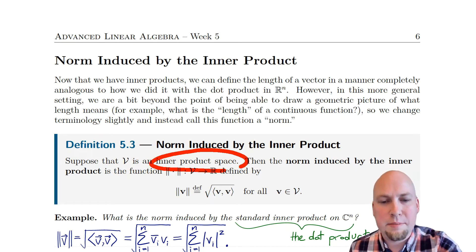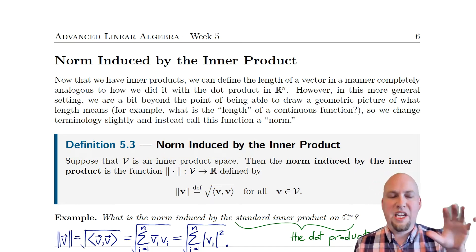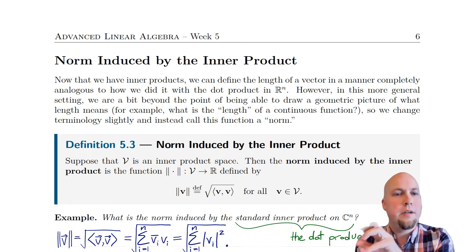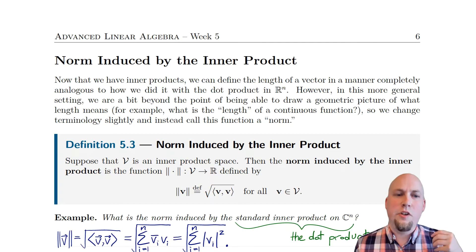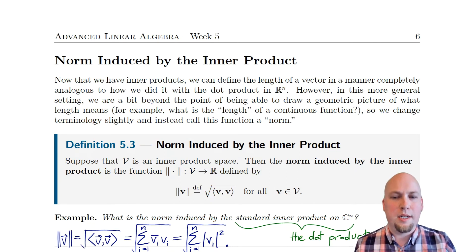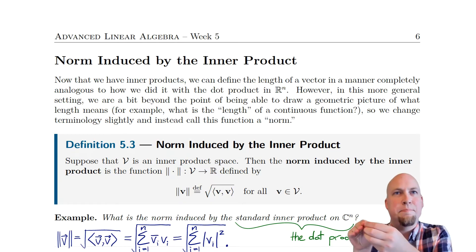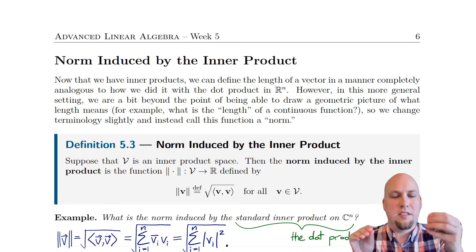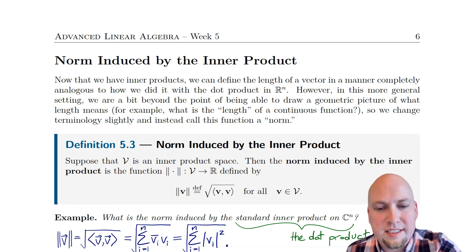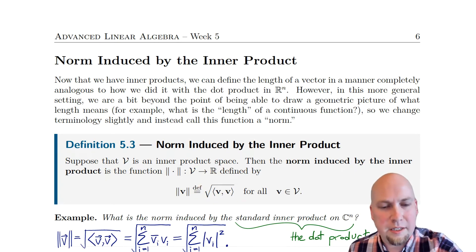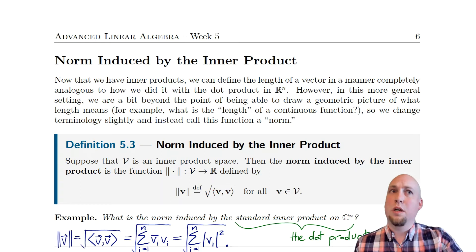All I mean by inner product space is it's a vector space with a particular inner product. I have a particular inner product in mind on this vector space. Then we say that the norm induced by the inner product is a function that spits out a positive real number — a function from the inner product space to the set of real numbers.